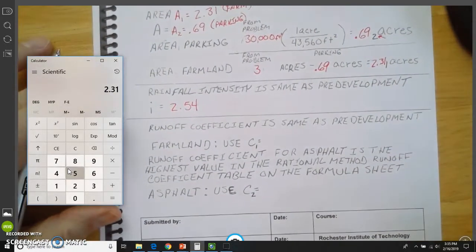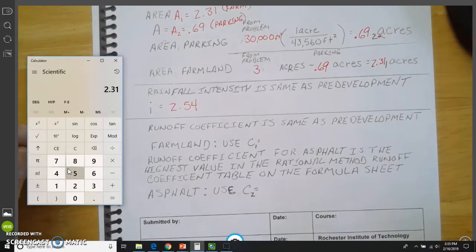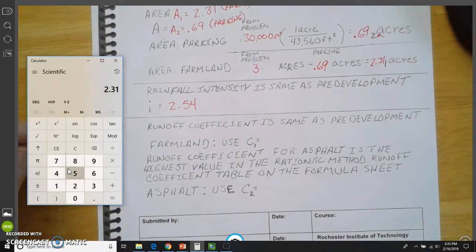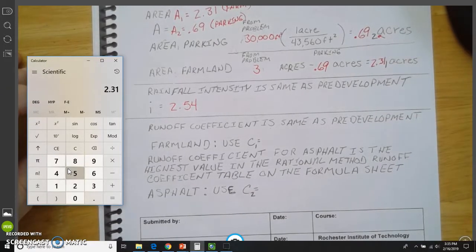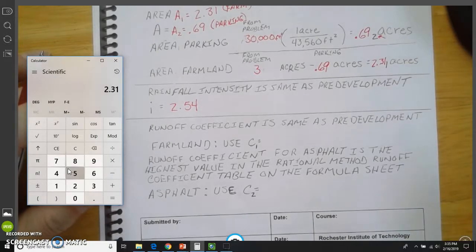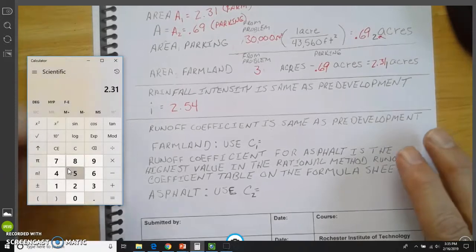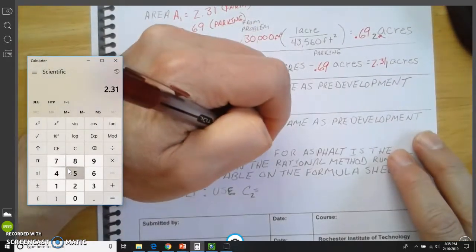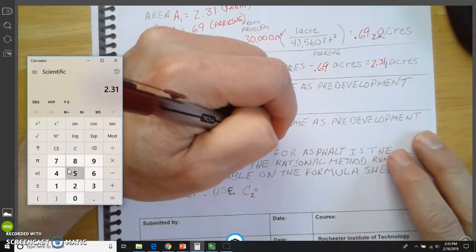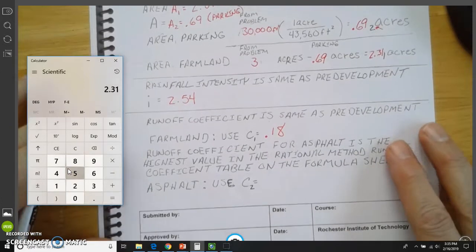Now, the runoff coefficient, that again comes from that chart on the formula page. And that is going to be the very same for farmland as we used in the first, in the pre-development problem. So that number was, and remember, it was an average of those two numbers, and that was 0.18.